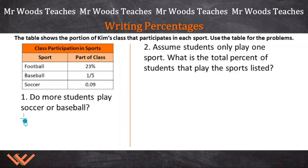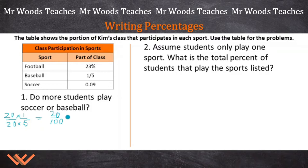Let's convert that into a decimal and then a percentage. I have one fifth, and I know that a percentage is per 100, so I'm going to put a 100 over here to create an equivalent fraction. Looking at our multiplication tables, five times 20 equals 100, so I multiply the bottom by 20 and do the same to the top. 20 times one is equal to 20, giving us 20 over 100, which as a decimal is 0.20. Moving the decimal point gives us 20%.